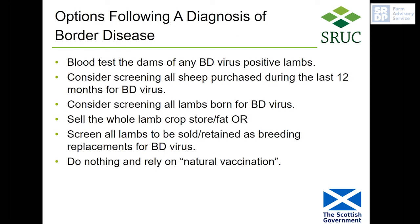Following a diagnosis of border disease in your flock, if you identify any border disease virus positive lambs, you should blood test their dams as they may also be positive. To find the possible source, one option is to screen all sheep purchased during the last 12 months. You could screen all lambs born that year for border disease virus, though that is often too expensive. However, if you want to sell or keep any for breeding, you should definitely screen them — you don't want to retain persistently infected animals. Alternatively, you can sell the whole lamb crop store or fat, but be aware that selling store potentially passes the problem on.